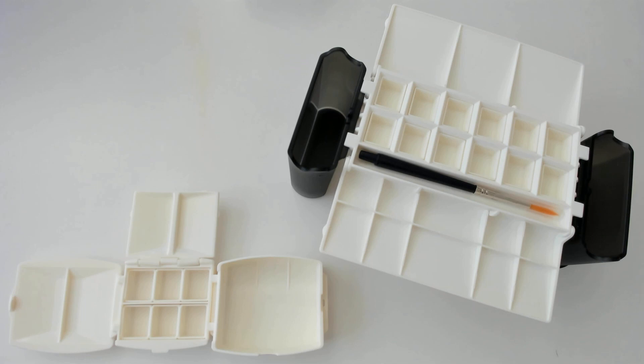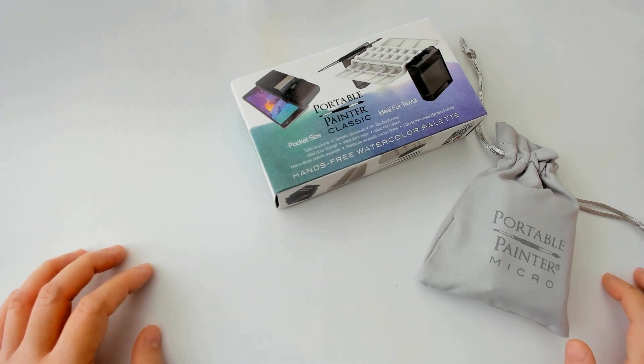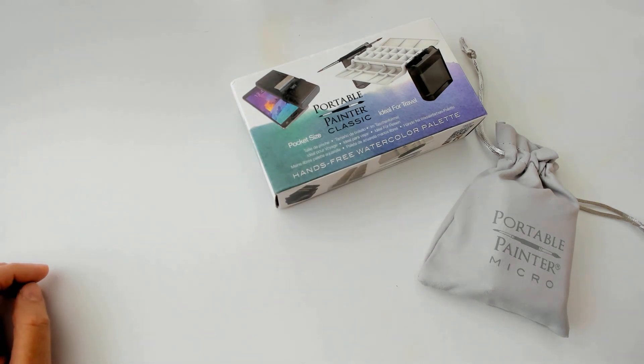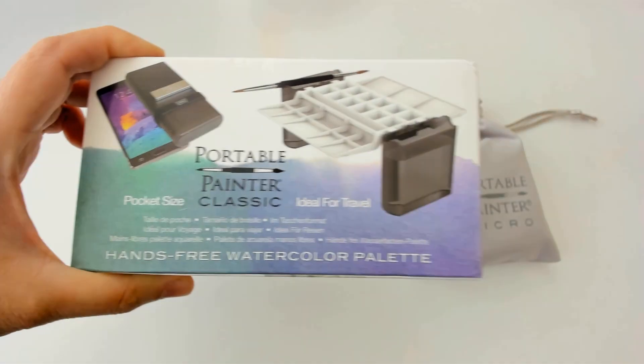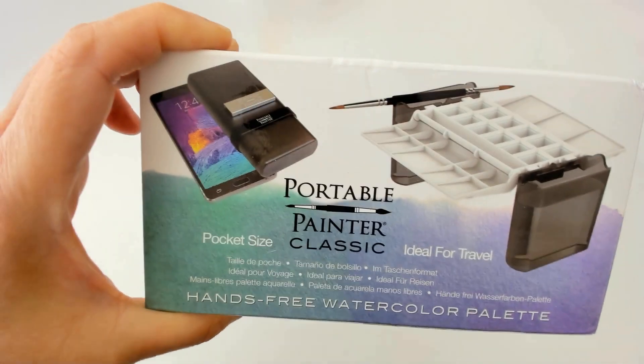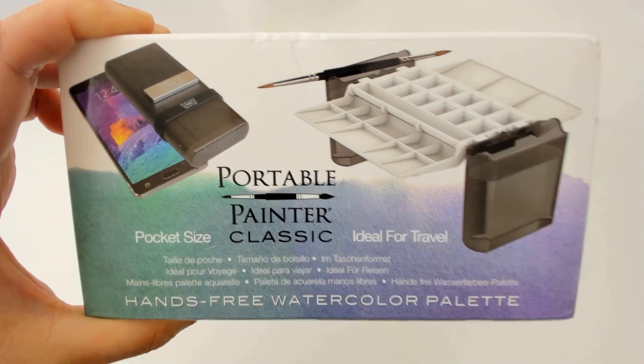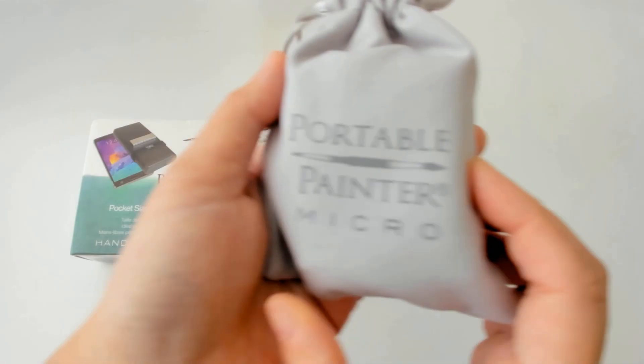So this is the Portable Painter bundle. You can purchase them separately or as a bundle. I got this bundle from Amazon because on the Portable Painter site, they didn't have this particular bundle. I'll leave the links in the description below. Originally, I was just looking at the Classic, but I saw that it came in a bundle, and I'm a sucker for bundles, so I had to get the Micro as well.